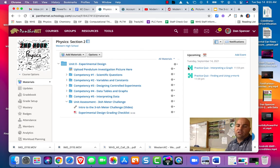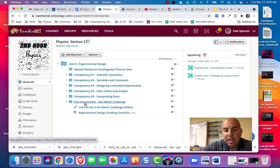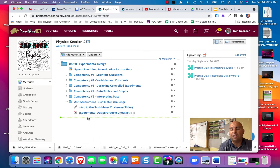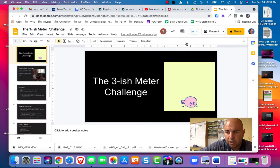So here's where this stuff is at. If you go into our experimental design unit and go into the unit assessment that's called the three-ish meter challenge, there's a link here to the slides. These are the slides that I'm going to be going through here in a second. And also there's this experimental design grading checklist. That's a really fancy name for a rubric. It shows you how you're going to get graded. So you know exactly what to expect.